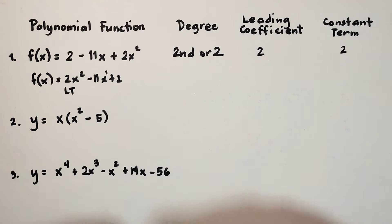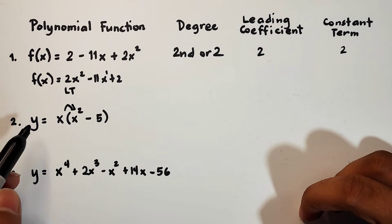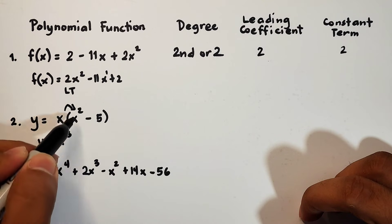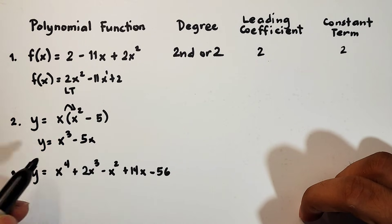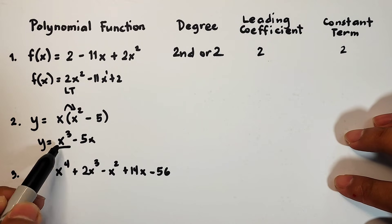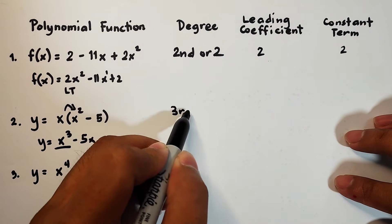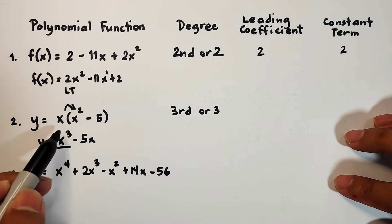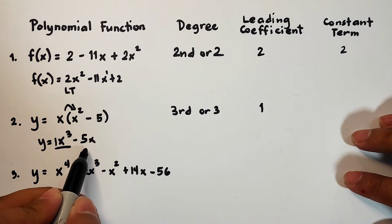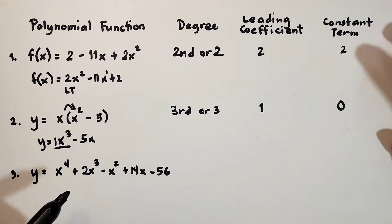Let's go with number 2. y is equal to x times x squared minus 5. Before we get the degree, we need to simplify this first using distributive property to be y is equal to x times x squared is x cubed then x times negative 5 that is negative 5x. The degree is 3 or 3rd degree because that's the highest exponent. The leading coefficient is 1, this invisible 1. Since we don't have a constant, you will write 0 to represent no constant.